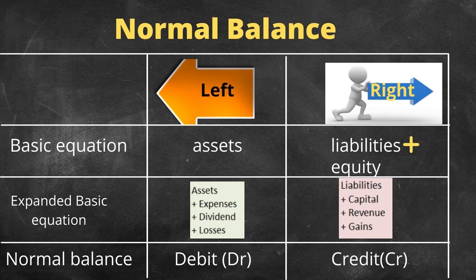In an expanded basic equation, assets, expenses, dividends, and losses are debit. Liabilities, capital, revenue, and gains are credit. The normal balance is always debit on the left and credit on the right.